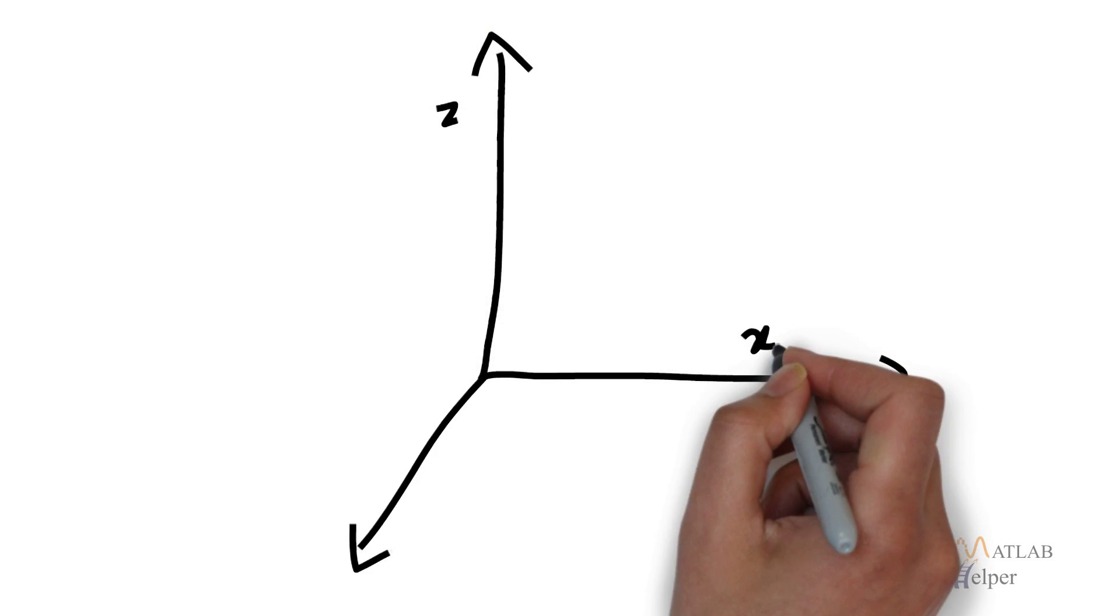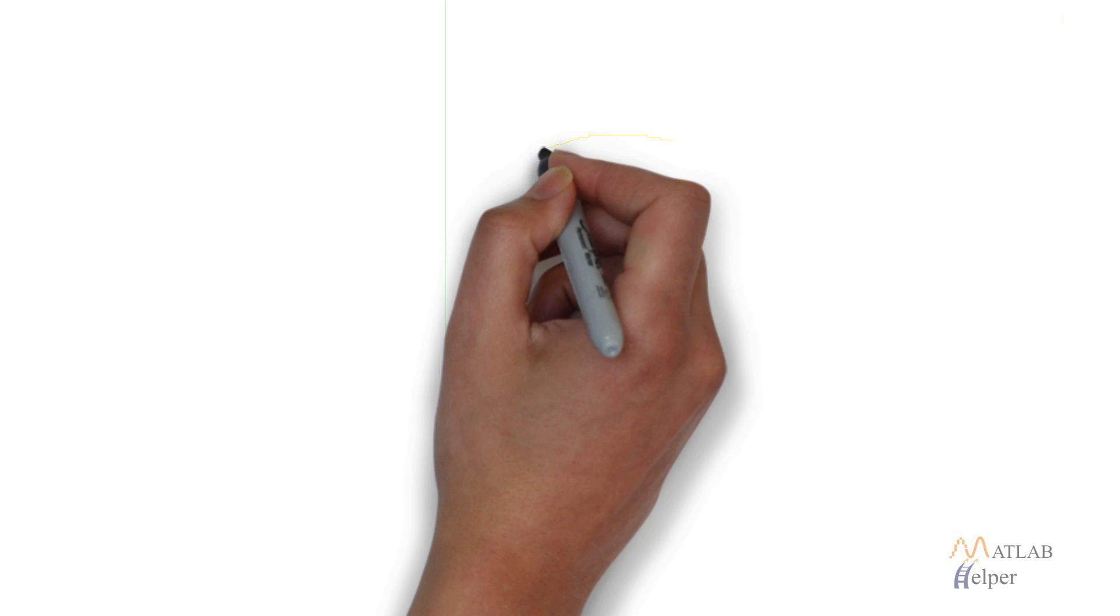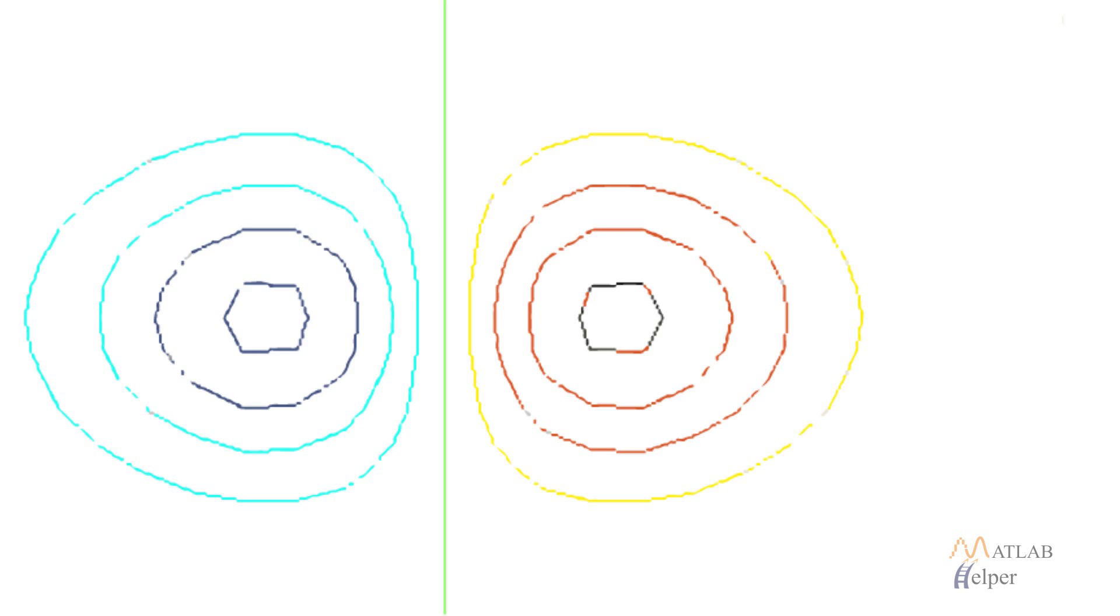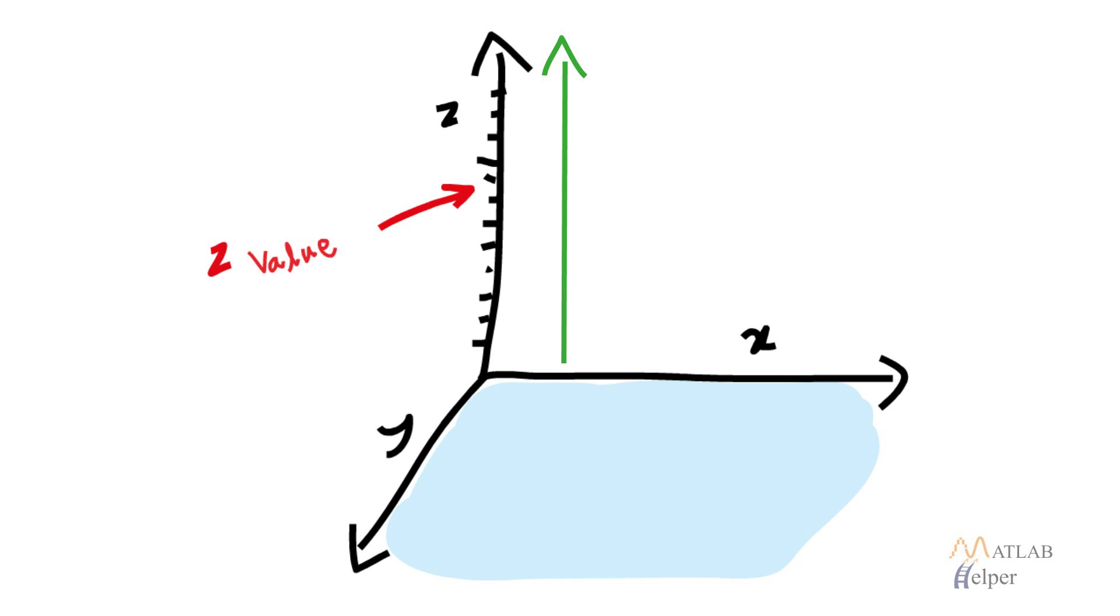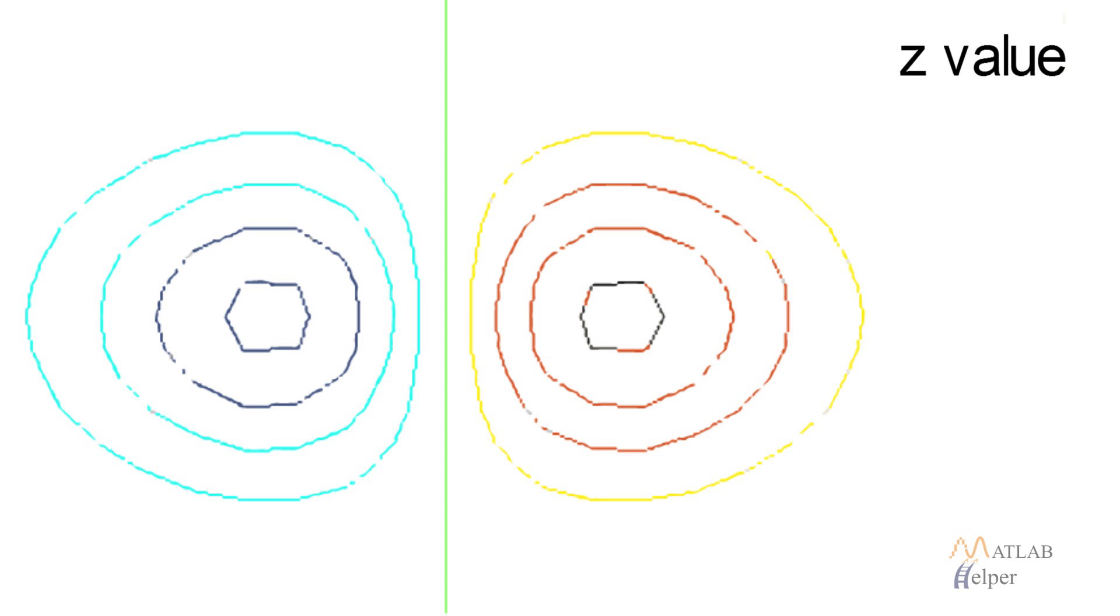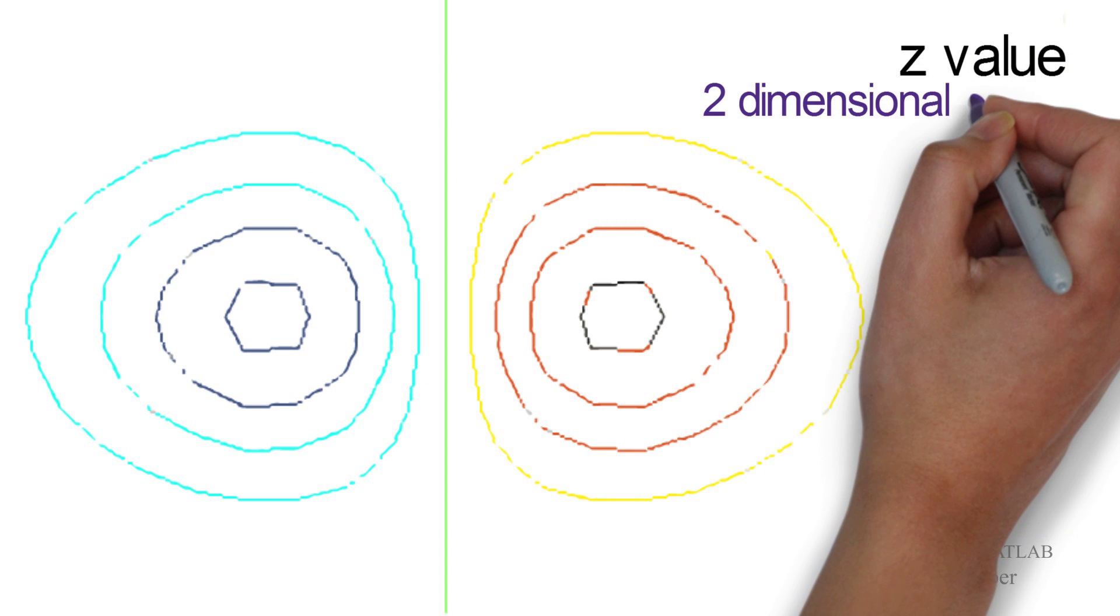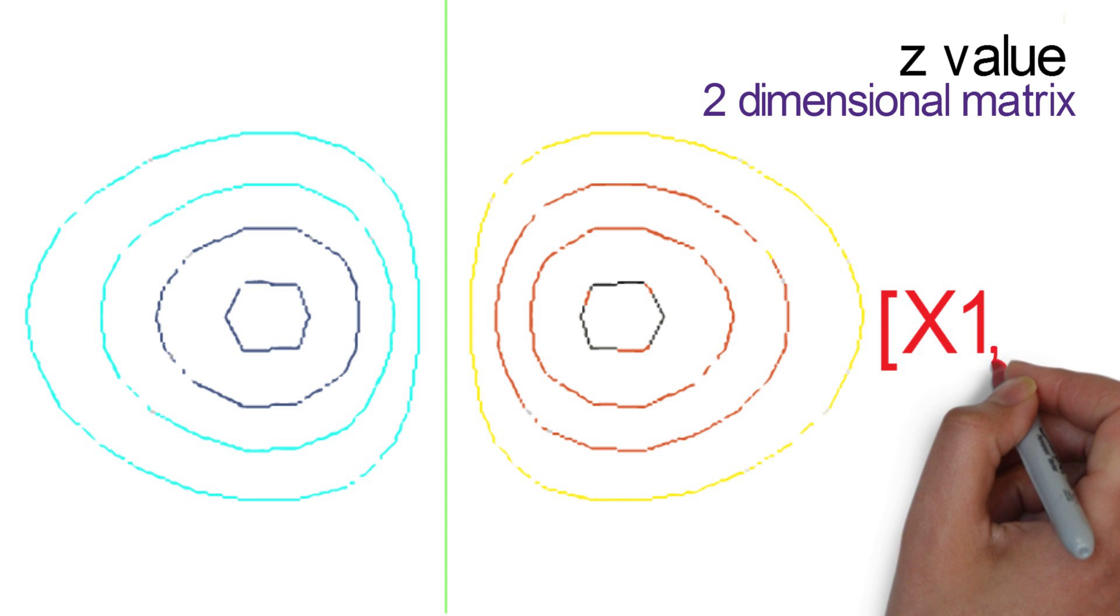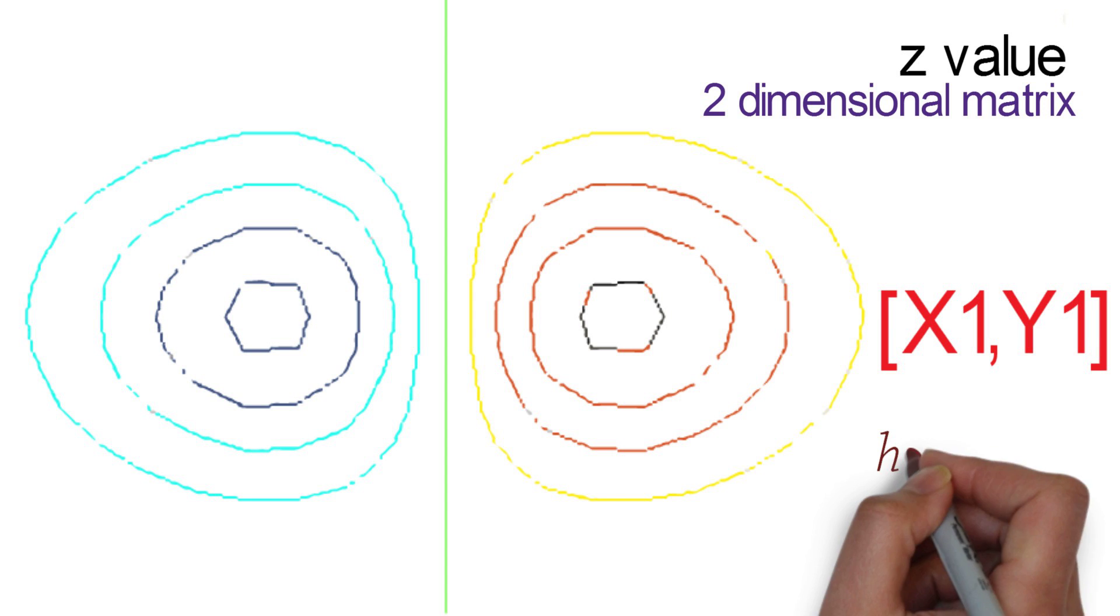Z values of our three-dimensional data can be visualized as contour lines. Contour lines interpret z values as height of points in x, y plane. To plot contours, we need to specify z values as a two-dimensional matrix, where each cell represents height of the x, y point formed by current row and column.